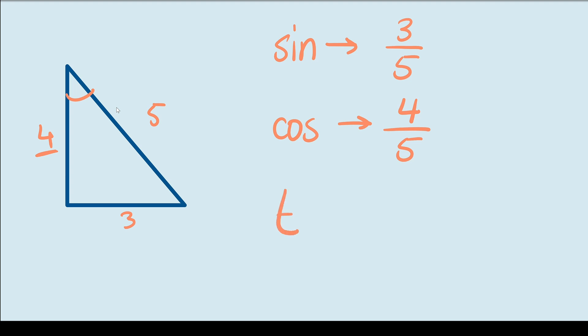Finally, we have tangent. Tangent is opposite over adjacent. Like I mentioned before, opposite is the side that's 3 and adjacent is the side that's 4. So, our answer is 3 over 4 for the tangent of that angle.